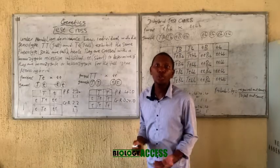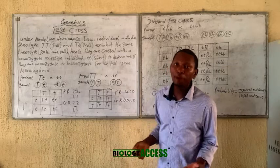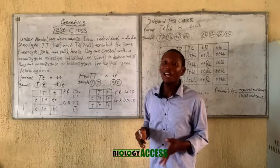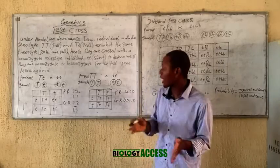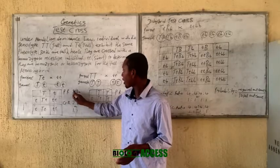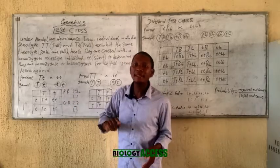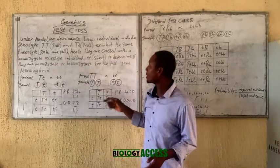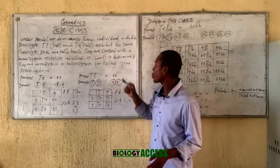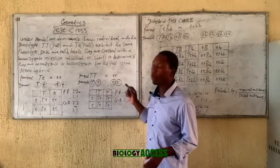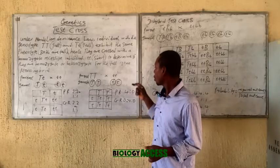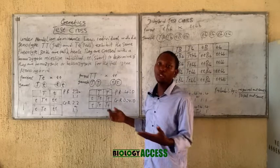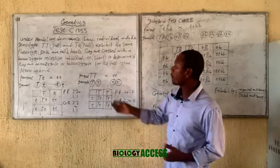If you carry out a cross and you don't know the genotype of a tall pea plant, and you cross it with a short one and half of the offspring are actually short while half are tall, it means that the tall pea plant is actually heterozygote for that trait. While if you cross the tall with the short and all the offspring are actually tall, it means that the tall pea plant is homozygote for that trait. Using this test cross method, you are able to deduce the genotype of the tall offspring.